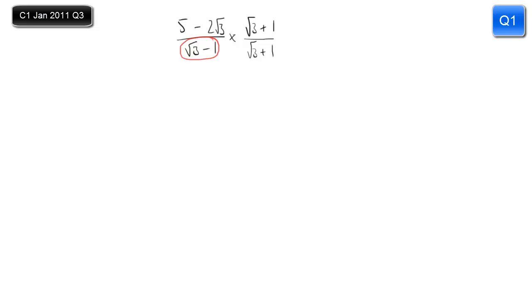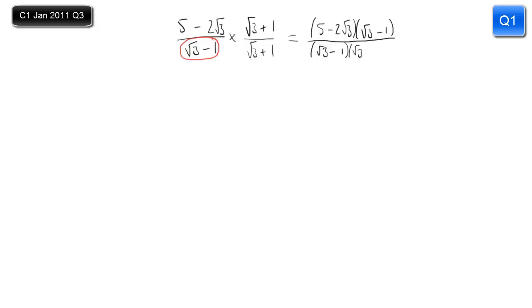The reason is because the difference of two squares means that the surds will disappear. In the numerator, I'll write it out in full: we've got 5 minus 2 root 3 times root 3 plus 1. In the denominator, if you're confident with the difference of two squares, you can skip this step — I'm going to put root 3 minus 1 times root 3 plus 1.